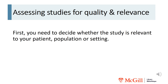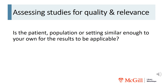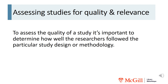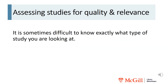Once you find a study, you need to decide whether the study is relevant for your patient, population, or setting. You need to ask yourself: is the patient, population, or setting similar enough to your own for the results to be applicable? To assess the quality of a study, it's important to determine how well the researchers followed the particular study design or methodology. It's also important to assess studies for quality and relevance, but it is sometimes difficult to know exactly what type of study you are looking at.